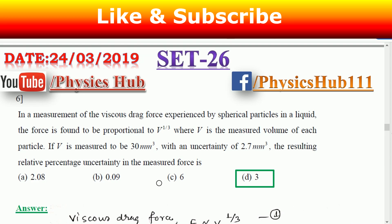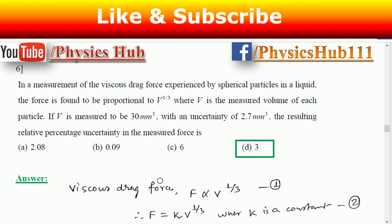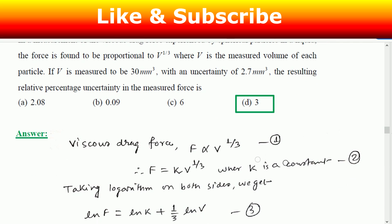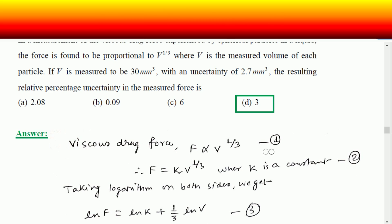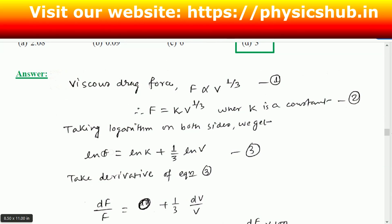Question number six: in a measurement of viscous drag force experienced by spherical particles in a liquid, the force is found to be proportional to V to the one-third, where V is the measured volume of each particle. If V is measured to be 30 mm³ with an uncertainty of 2.7 mm³, what is the resultant relative percentage uncertainty in the measured force? Since F is proportional to V to the power 1/3, we write F equals k times V to the 1/3.